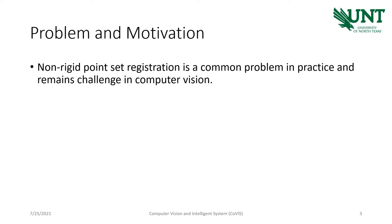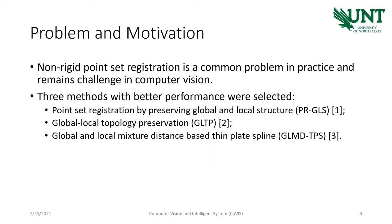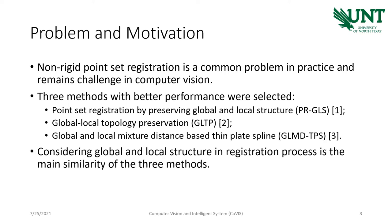Non-rigid point-set registration is a common problem in practice and remains a challenge in computer vision. As shown in the figure, the point-set registration is mapping one point-set to another one. We need to find the transformation based on correspondence between the point-sets. We selected three non-rigid point-set registration methods based on their better performance in a great number of experimental results. We found that they share a main similarity, which is that they are considering local and global structure preservation in the process of registration.